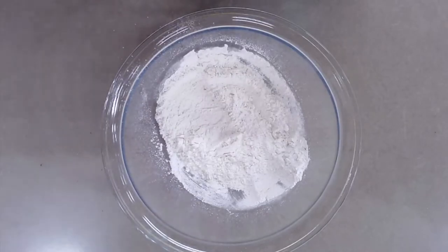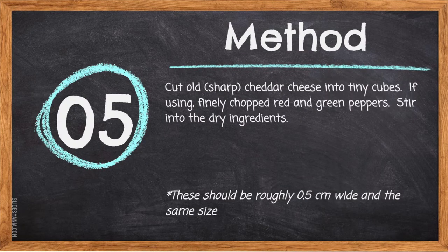Step five: cut old sharp cheddar cheese into tiny cubes. If using, finely chop red and green peppers and stir them into the dry ingredients. Pieces should be roughly half a centimeter wide and all the same size.